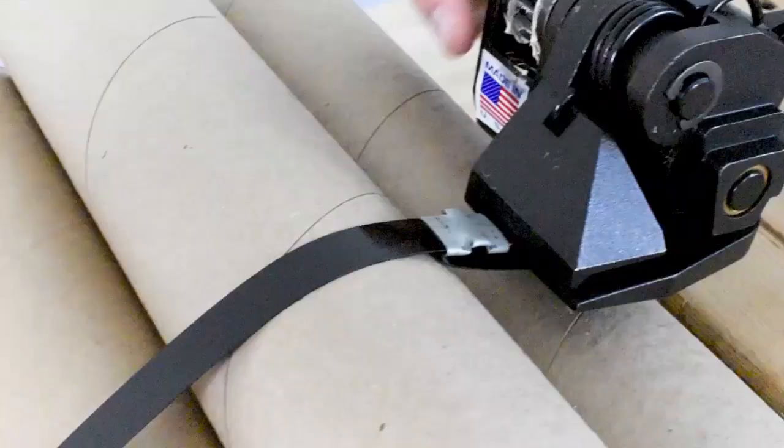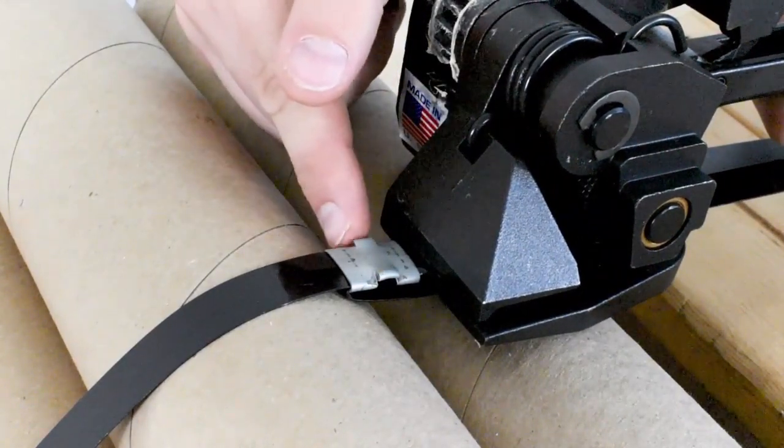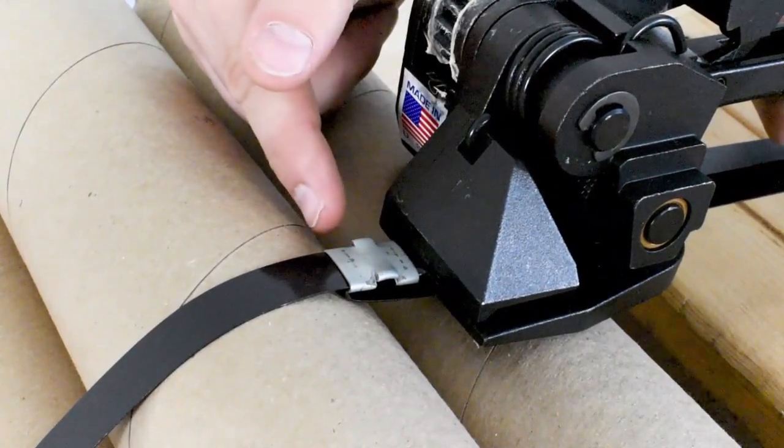And then here you can see that crimp being made and then you can see that we do have a single notch because of our single notch sealer.